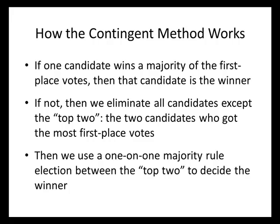Let's remember how the contingent method works. If one candidate wins a majority of the first place votes, then we declare that candidate the winner. If not, we eliminate all candidates except the top two — those who got the most first place votes — then use a one-on-one majority rule election between those top two to decide the winner.